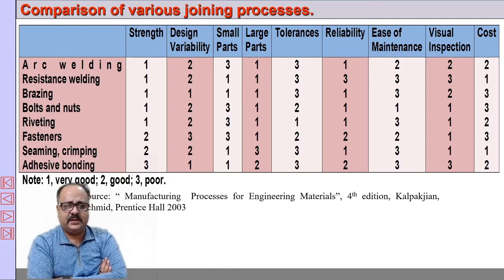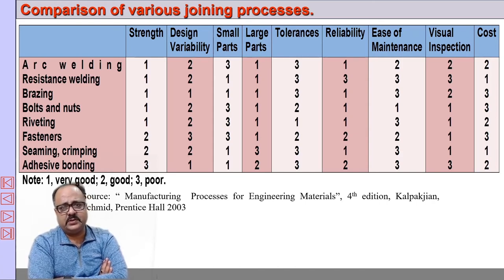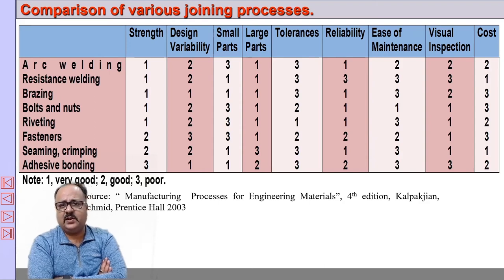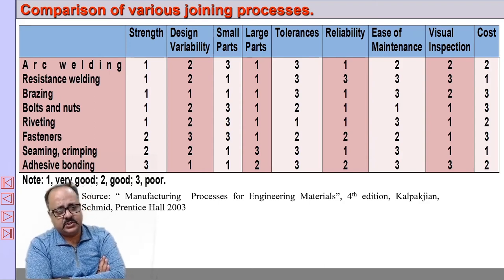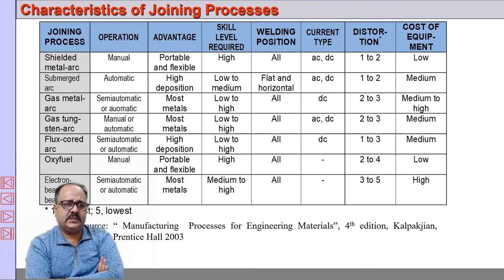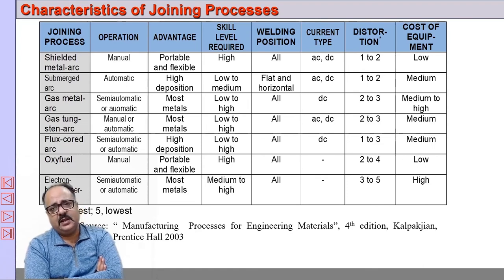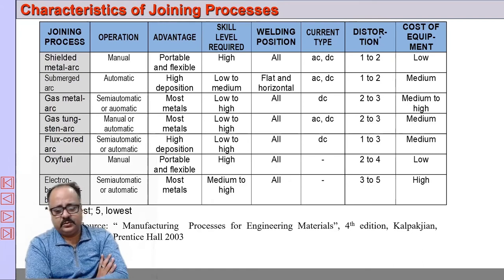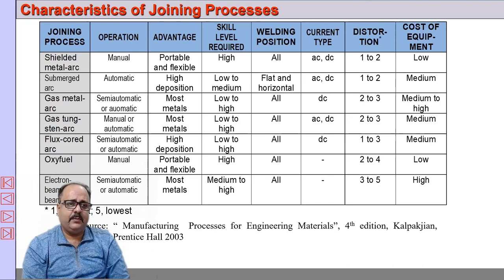This is a comparison taken from the Kalpakjian book. It shows and compares different joining processes from the perspective of strength, design, small parts, large parts, tolerance, reliability, ease of maintenance, visual inspection, and cost. There is also a comparison of different welding processes showing which can be automatic, their advantages, skill level required, welding position capability, current type, and level of distortions, as well as cost of equipment.